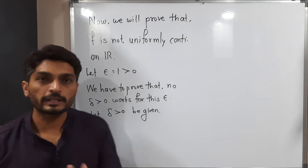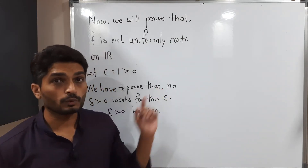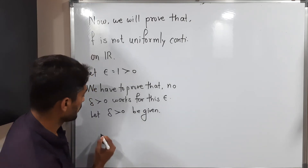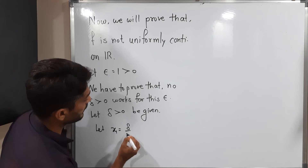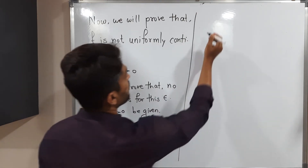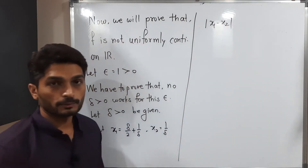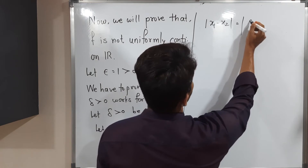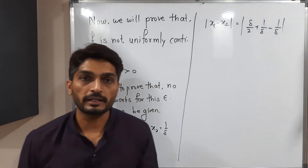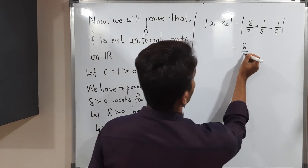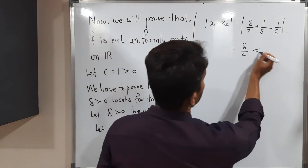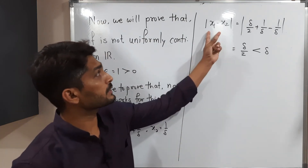So let epsilon = 1 and delta > 0 be given. I will select two points: let x₁ = δ/2 + 1/δ, and x₂ = 1/δ. Let us find |x₁ − x₂|. We have |x₁ − x₂| = |(δ/2 + 1/δ) − 1/δ| = δ/2. Since δ and 2 are both positive, there is no need for the modulus. And δ/2 < δ, so we get |x₁ − x₂| < δ — a very important result.